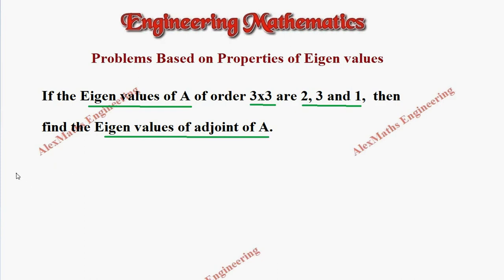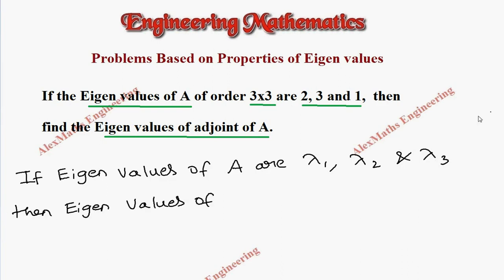Suppose if the eigenvalues of A are taken as lambda 1, lambda 2 and lambda 3. Then the eigenvalues of adjoint of A.